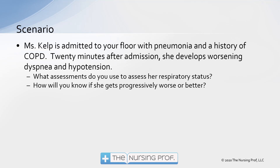Starting out with a scenario here. Ms. Kelp is admitted to your floor with pneumonia and a history of COPD. 20 minutes after her admission, she develops worsening dyspnea and hypotension. What assessments are you going to use to assess her respiratory status? And how will you know if she gets progressively worse or progressively better?